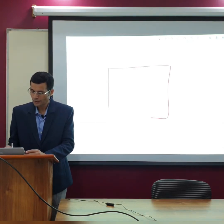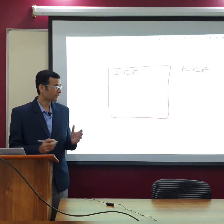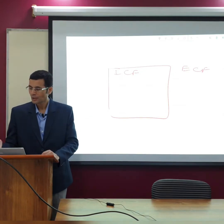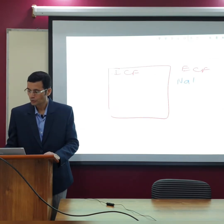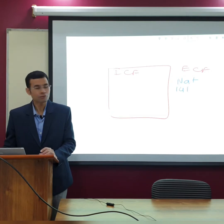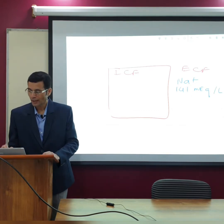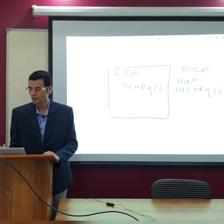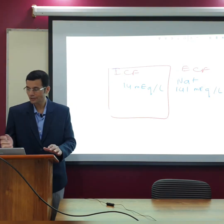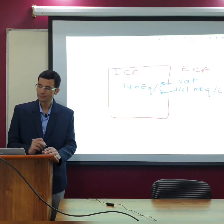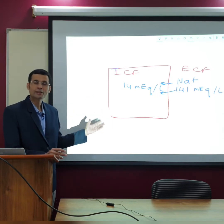A cell has intracellular fluid (ICF) and extracellular fluid (ECF) surrounding it. Sodium has a concentration of 141 milliequivalents per litre in the ECF and 14 milliequivalents per litre in the ICF. This means sodium has a concentration gradient from outside to inside, so diffusion of sodium will occur from outside to inside.